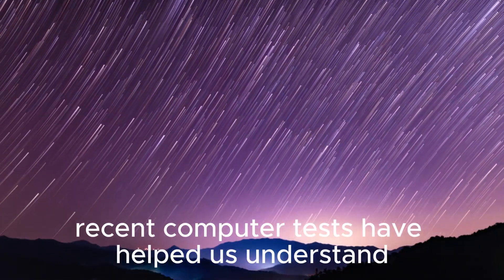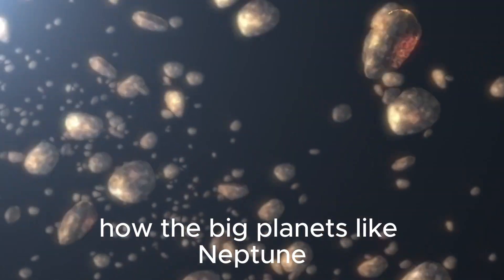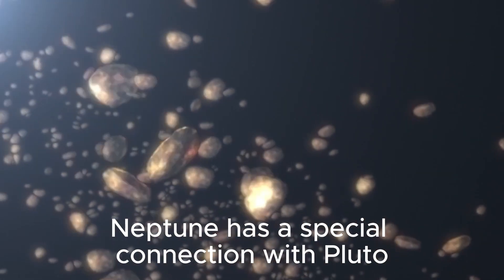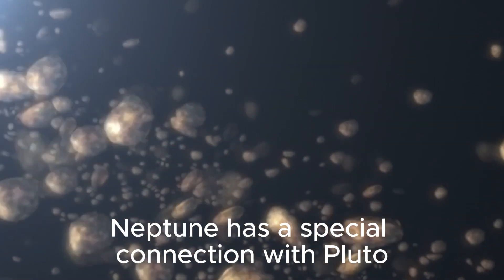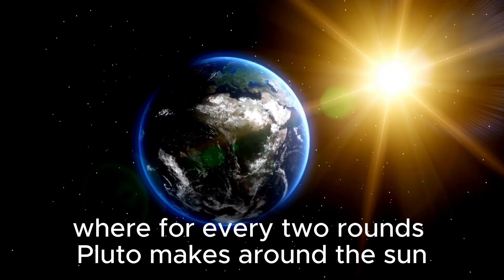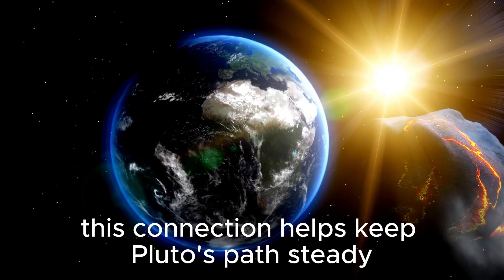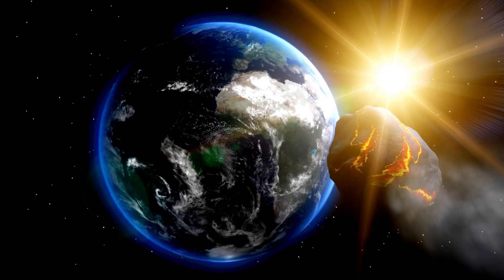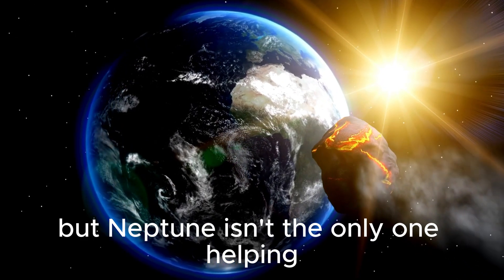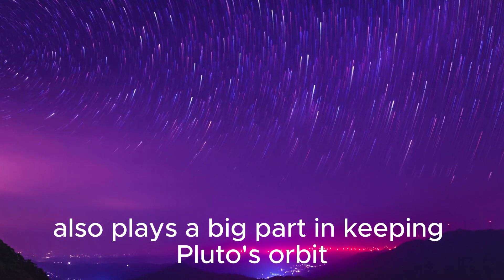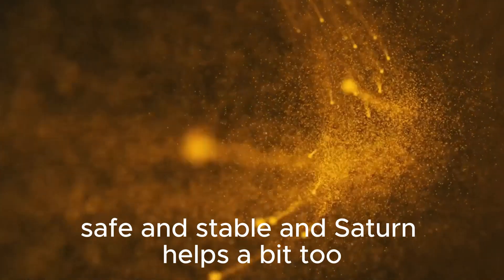Recent computer tests have helped us understand how the big planets like Neptune, Jupiter, and Saturn affect Pluto's path around the Sun. Neptune has a special connection with Pluto, where for every two rounds Pluto makes around the Sun, Neptune makes three. This connection helps keep Pluto's path steady. But Neptune isn't the only one helping. Jupiter's gravity also plays a big part in keeping Pluto's orbit safe and stable, and Saturn helps a bit too.